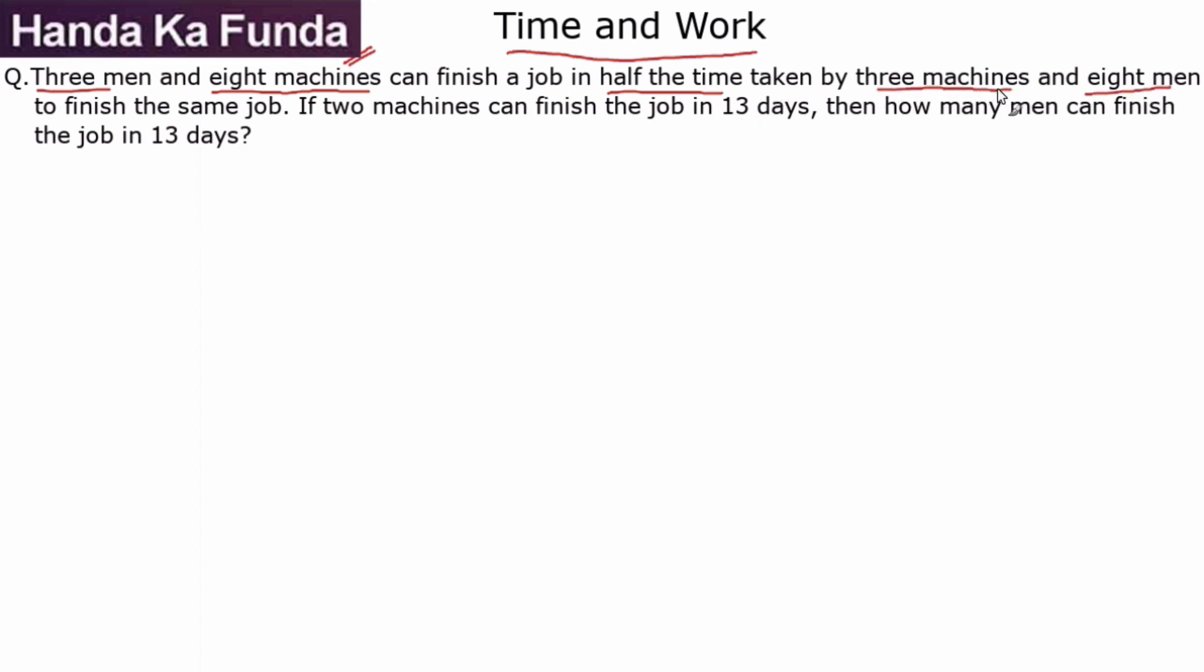Now since both men and machines start with M, this can create confusion later. So let's say a man does 'a' units of work in a day, whereas a machine does 'b' units of work in a day. If I have this, then my calculations would be a lot easier and there would be less confusion.